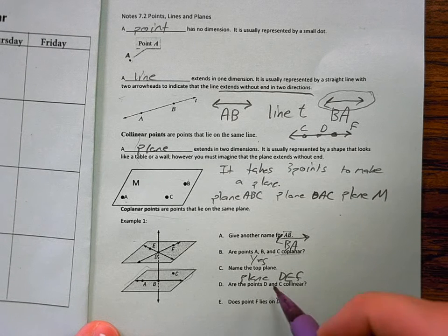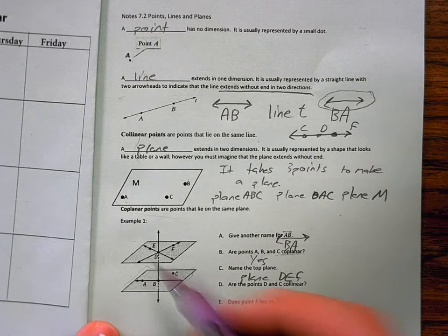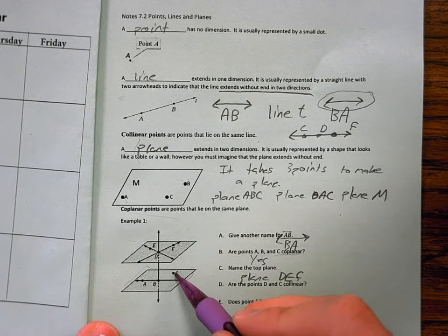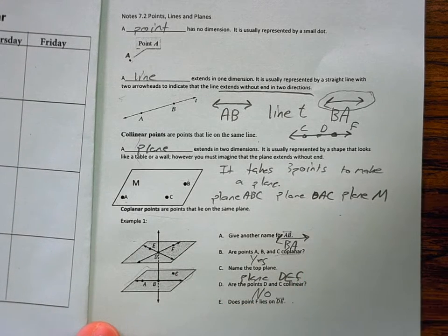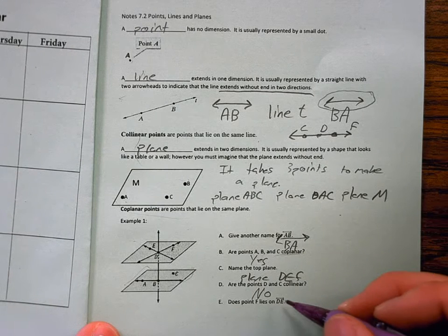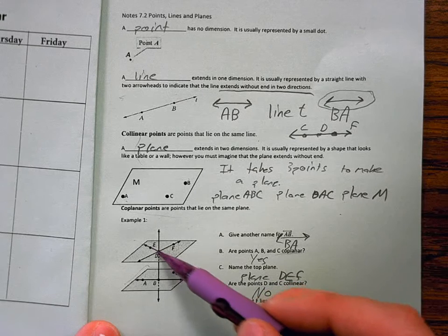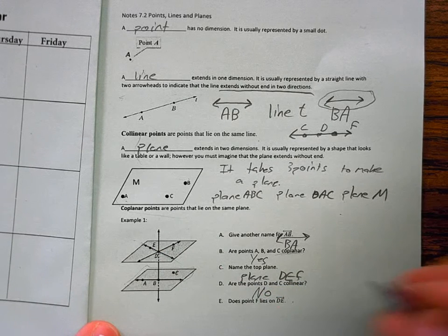Are points D and C collinear? No, D is way up here in this plane. C is not even on the same plane. They are definitely not collinear. Does point F lie on DE? DE is this line going this direction. Point F is way over here. So the answer is no.